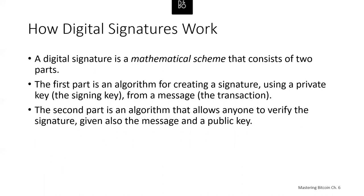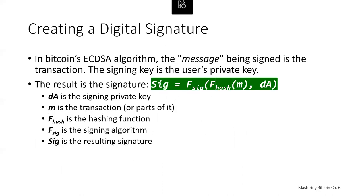A digital signature consists of two parts: an algorithm for creating a signature using a private key (signing key) from a message (in Bitcoin's case, a transaction), and an algorithm that allows anyone to verify the signature given the message and public key. In Bitcoin's ECDSA implementation, the message signed is a transaction (or a hash of a subset of data in the transaction), the signing key is the user's private key, and the result is a signature: Sig = F_sig(F_hash(m), dA), where dA is the signing private key, m is the transaction, F_hash is the hashing function, and F_sig is the signing algorithm. F_sig produces a signature composed of two values commonly referred to as R and S, which are then serialized into a byte stream.